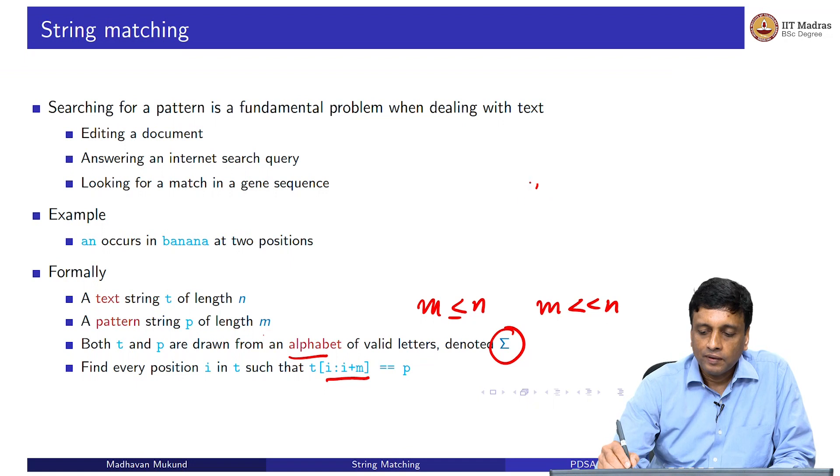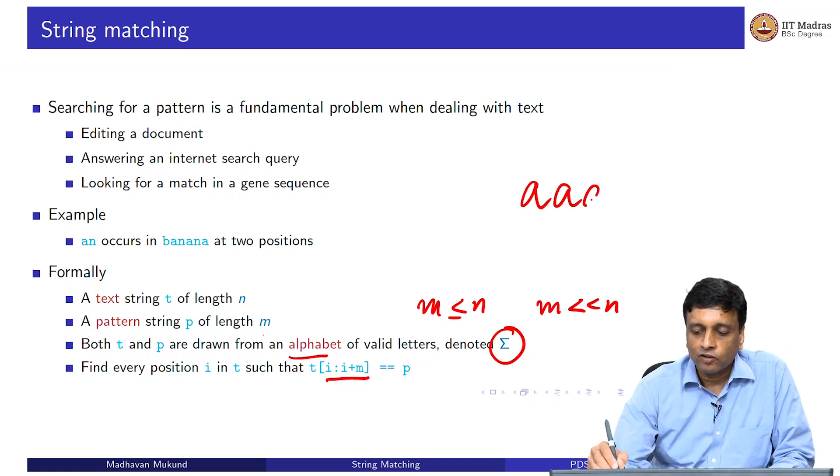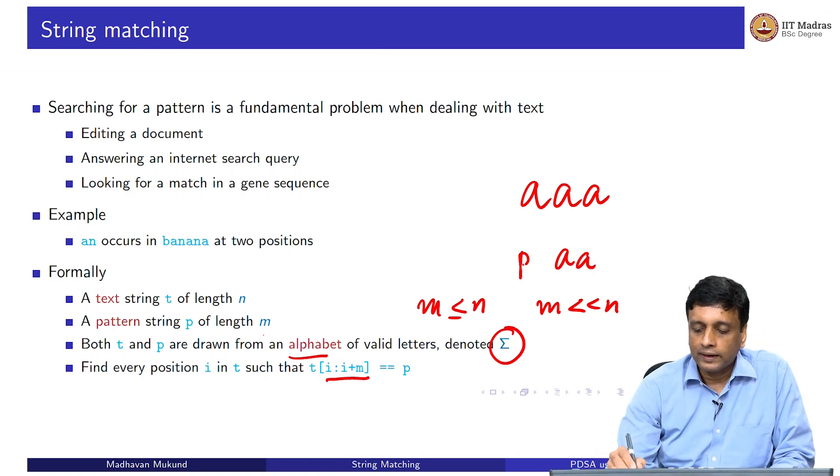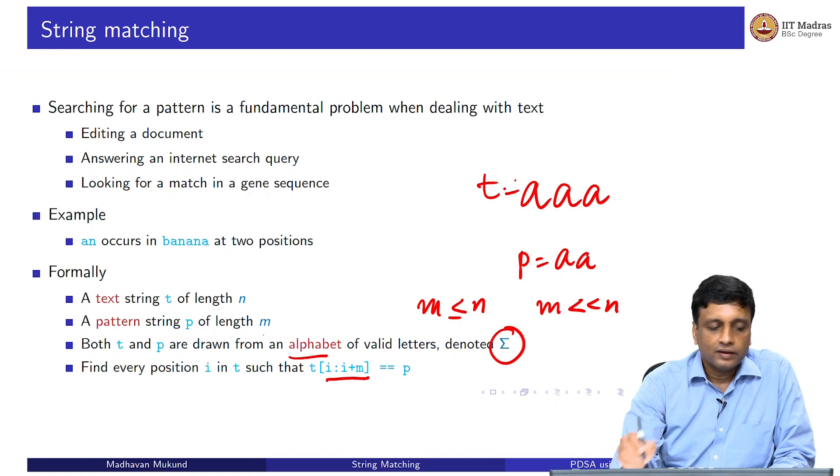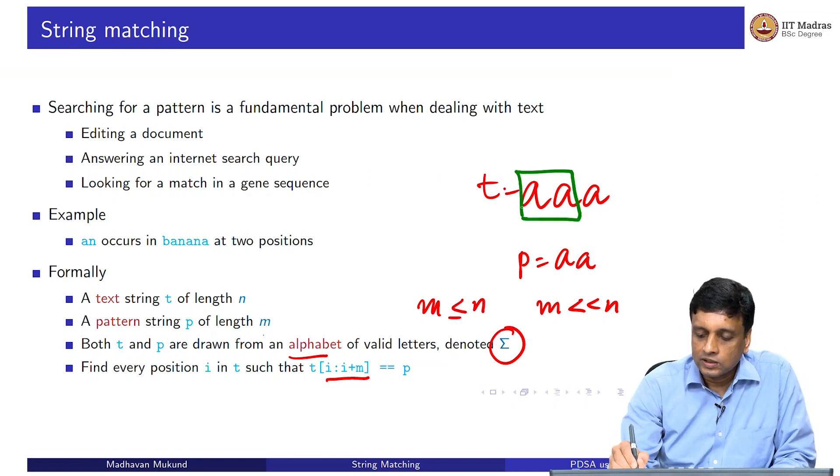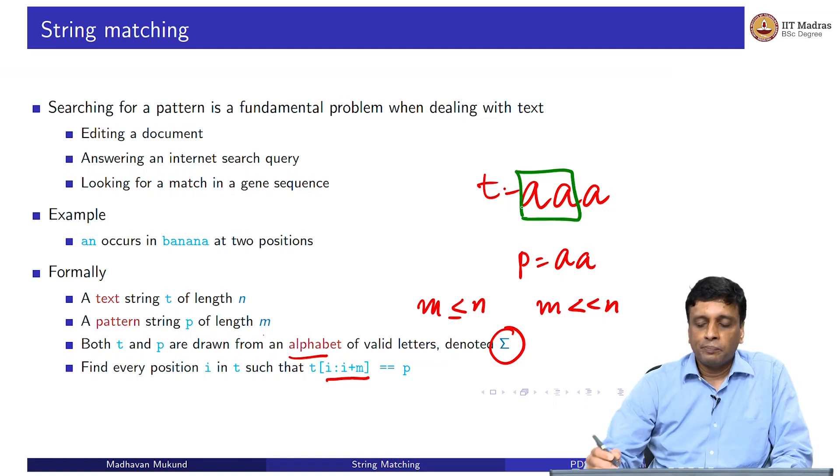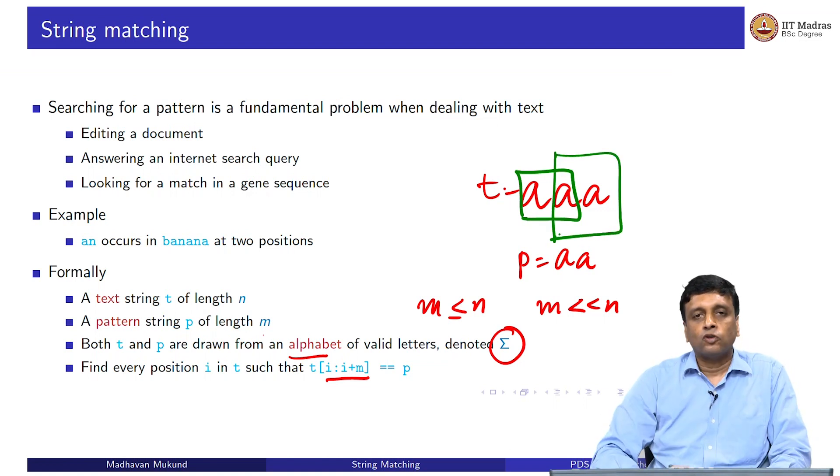In particular, if we had a piece of text where patterns overlap, for instance, we have aaa as our text and we have two a's as our pattern. This is my pattern and this is my text. Then you would report position 0 because at position 0, there is a match for my pattern, but you would also report position 1 because at position 1 also if I start looking at the slice of length 2, I have a match for my pattern. These positions need not be disjoint. We want every i so that the slice of length m starting at i matches p.